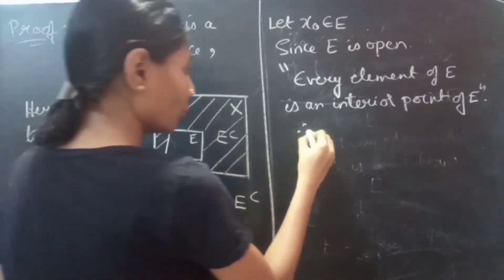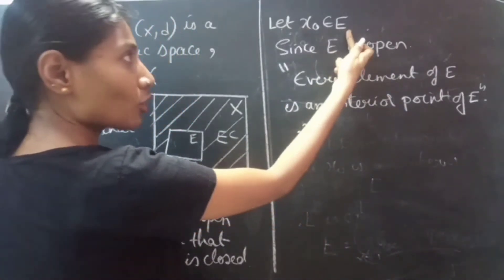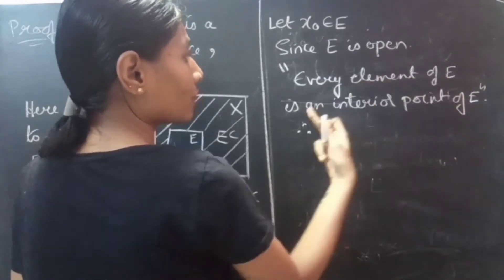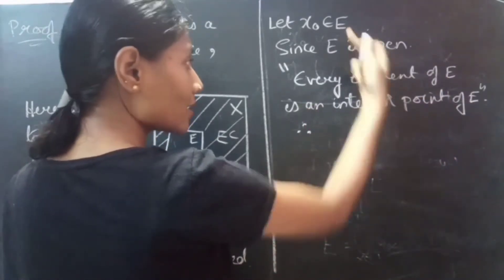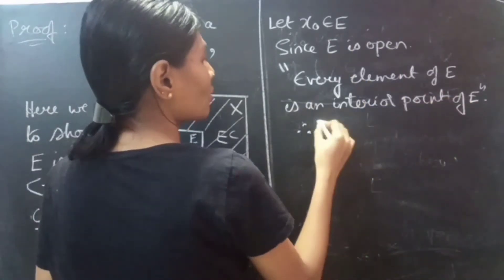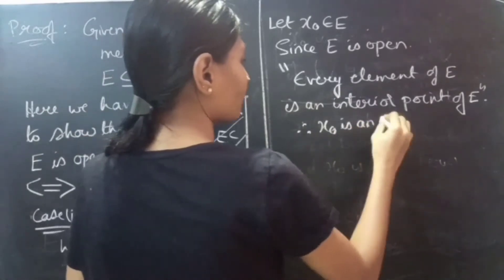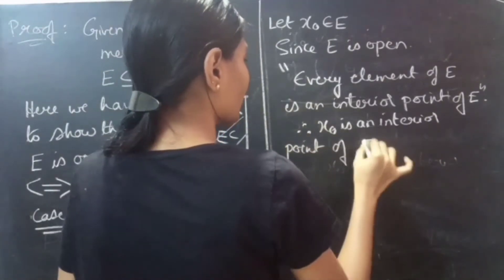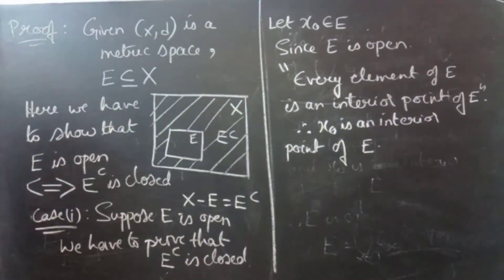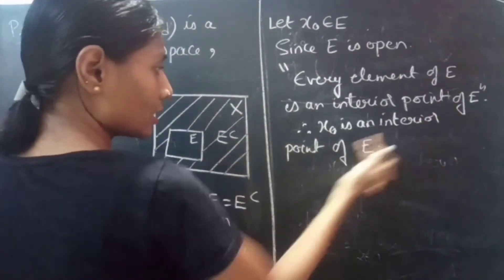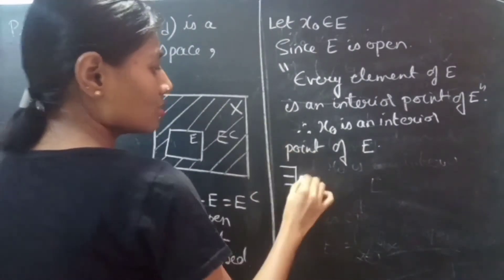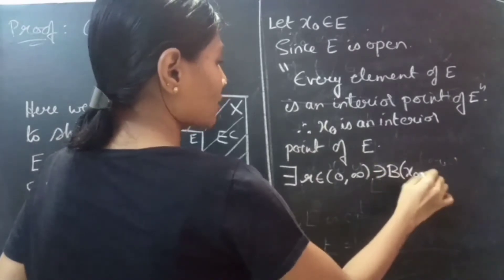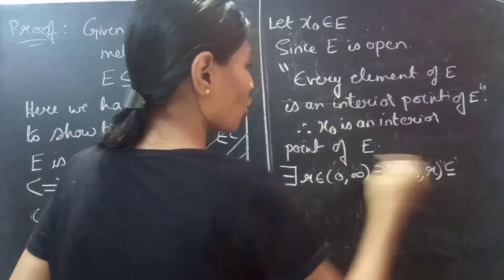Since X naught is an element of E, and every element of E is an interior point of E, we can say X naught is an interior point of E. By the interior point definition, there exists an R in the open interval (0, ∞) such that the ball B(X naught, R) is a subset of E.